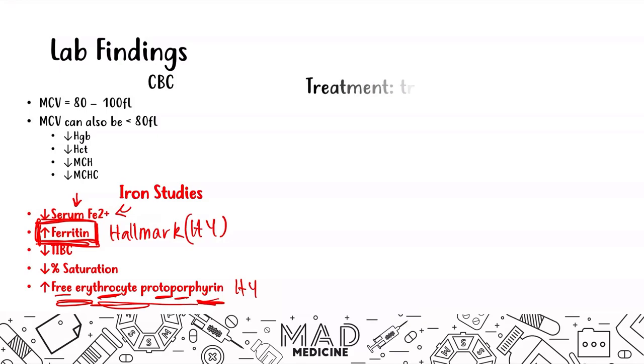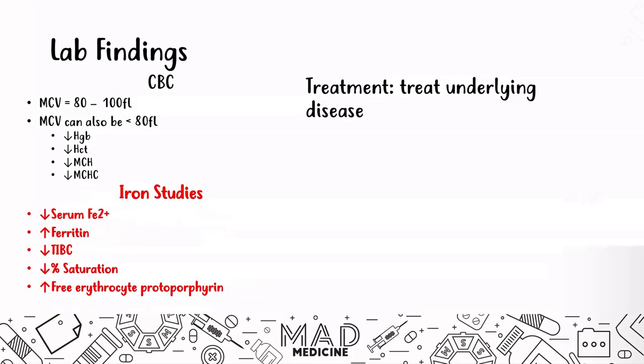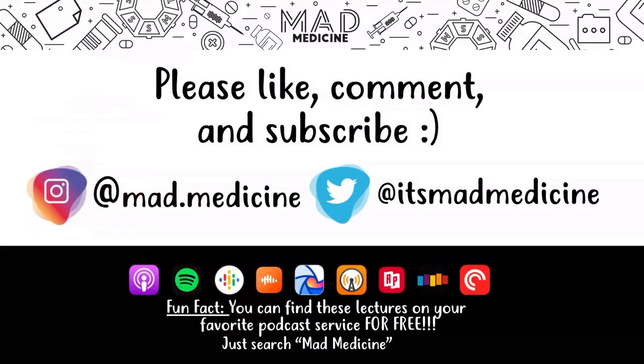The treatment for anemia of chronic disease is very simple — you treat the underlying cause of the disease. If you treat the underlying cause, you will eradicate the anemia occurring because of that disease. This is a secondary anemia; it is not intrinsic, it is happening because something else in the body is driving it. That covers everything you need to know for Step 1 on anemia of chronic disease.